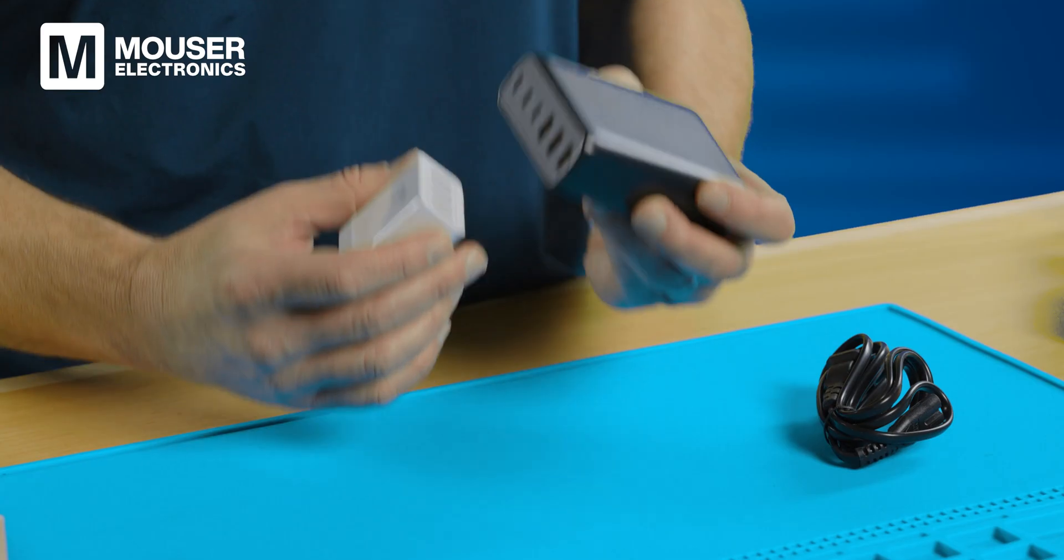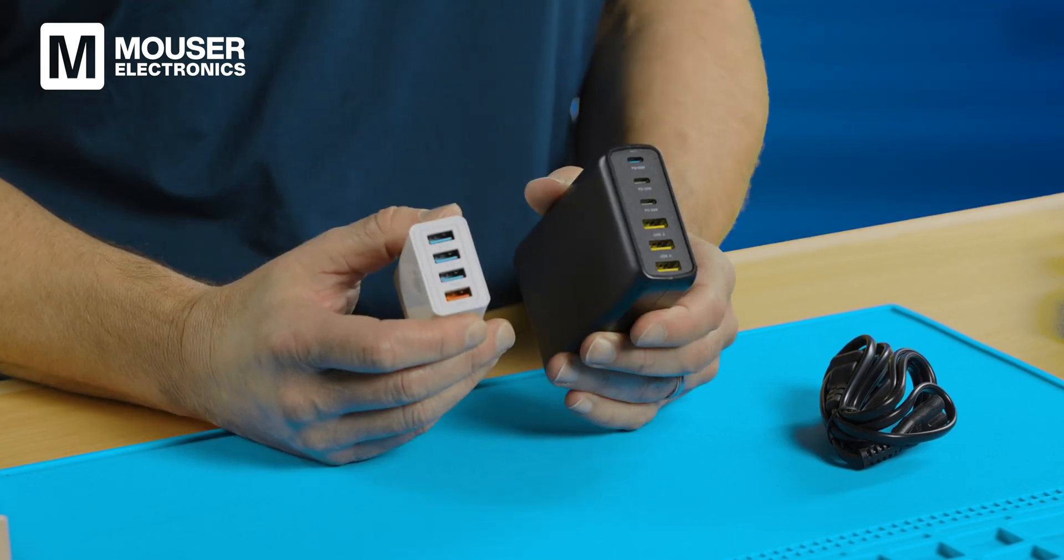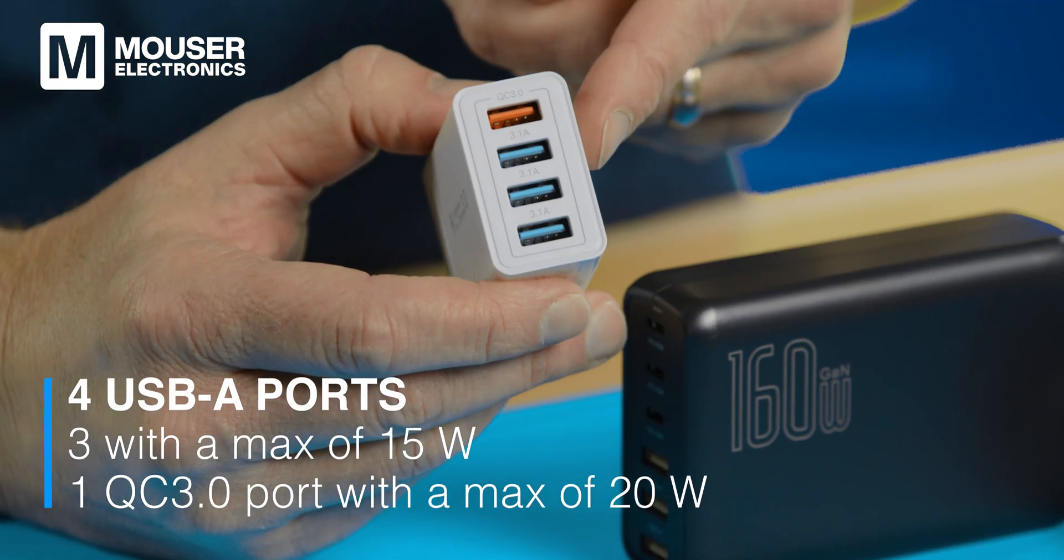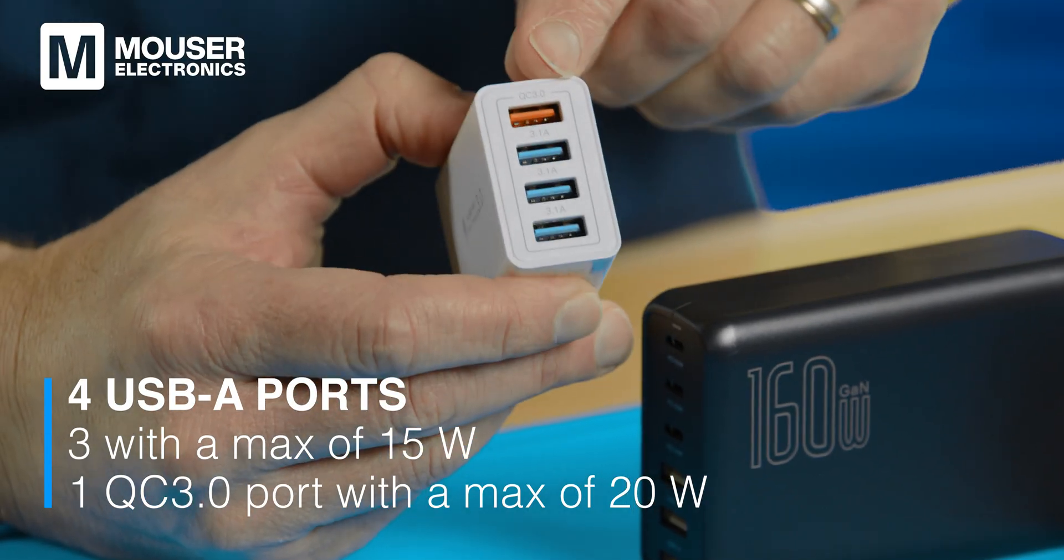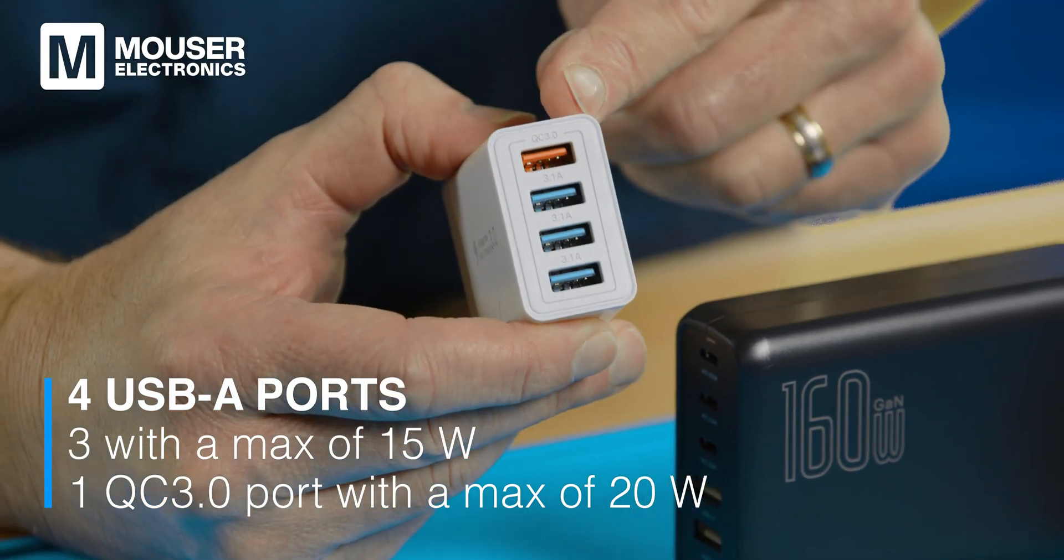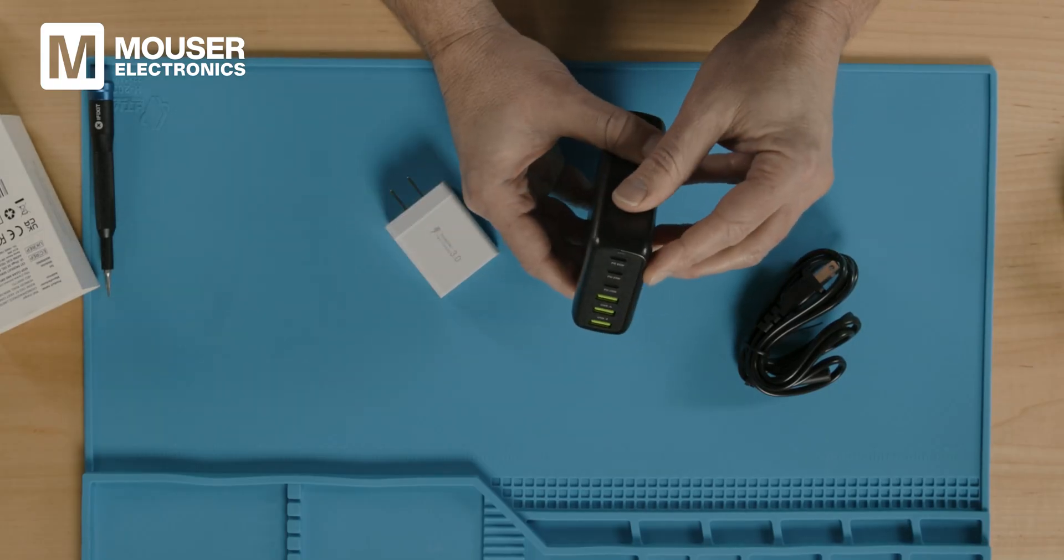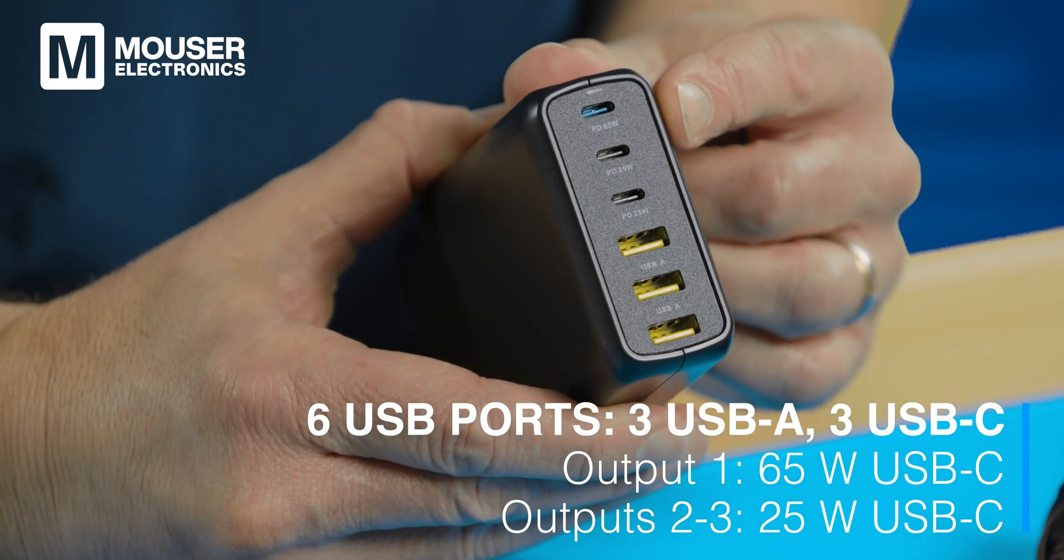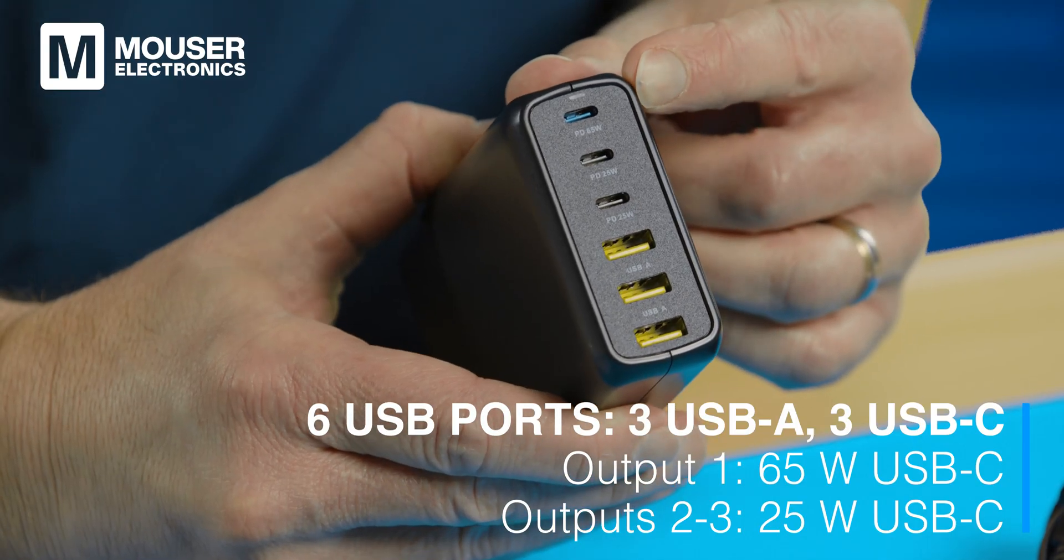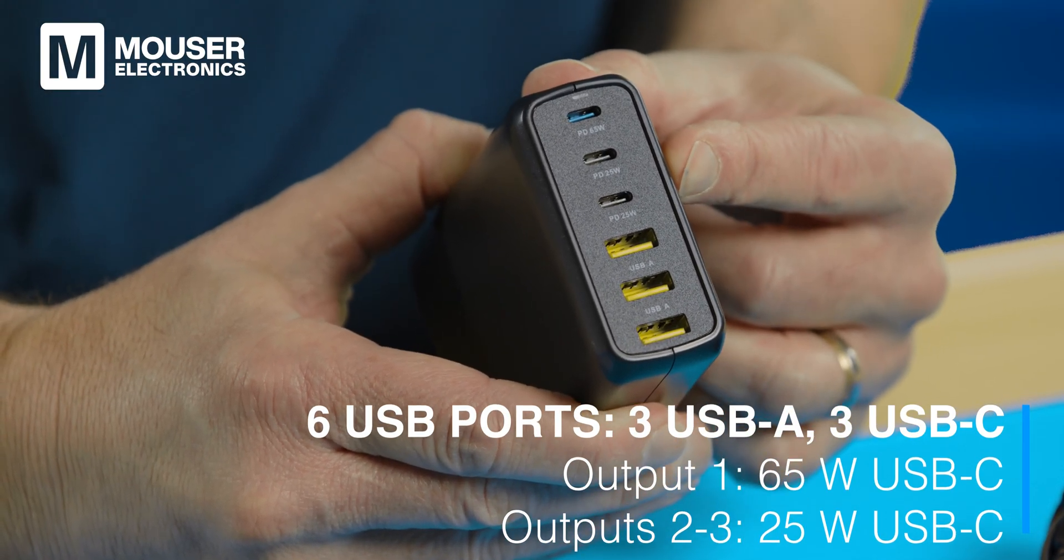Besides the size, the other obvious differences in these two USB chargers are the number and types of USB ports. All four of the 40 watt wall charger ports are for USB-A plugs. The top port supports the Qualcomm Quick Charge QC 3.0 specification. The 160 watt wall charger has three USB-A ports and three USB-C ports. The top USB-C port supports a maximum of 65 watts, while the other two are limited to only 25 watts.